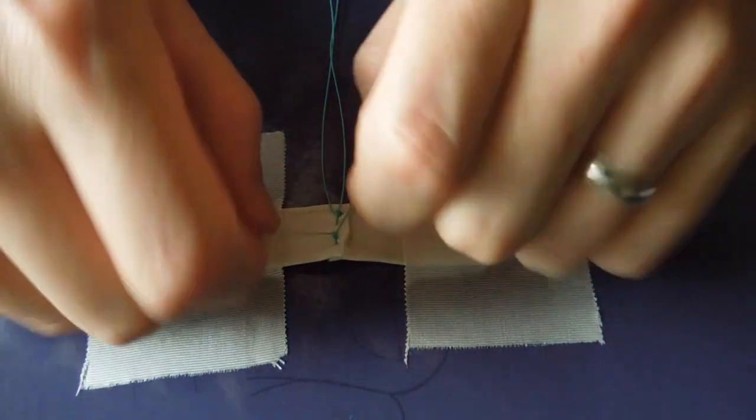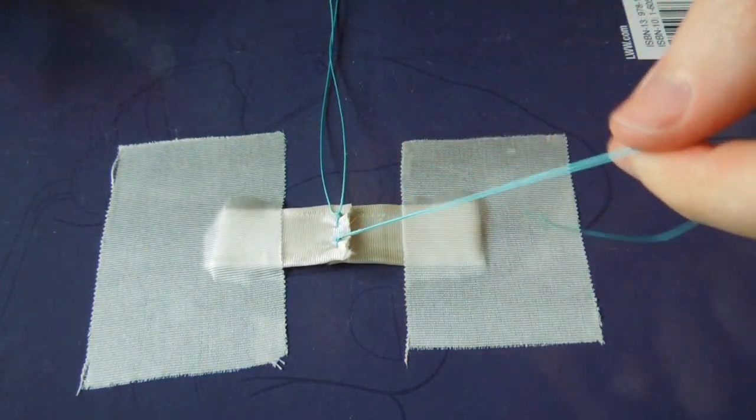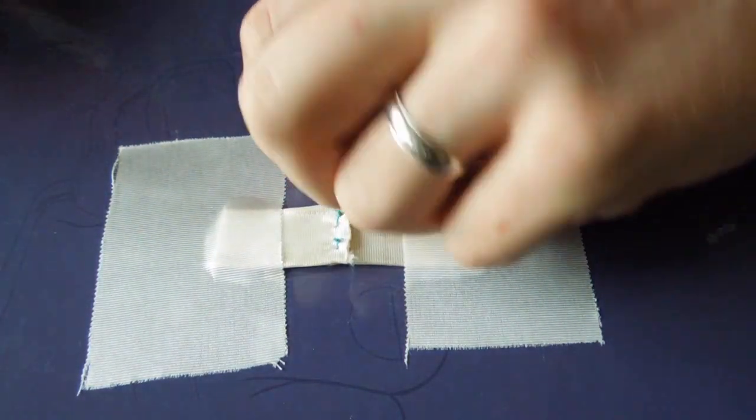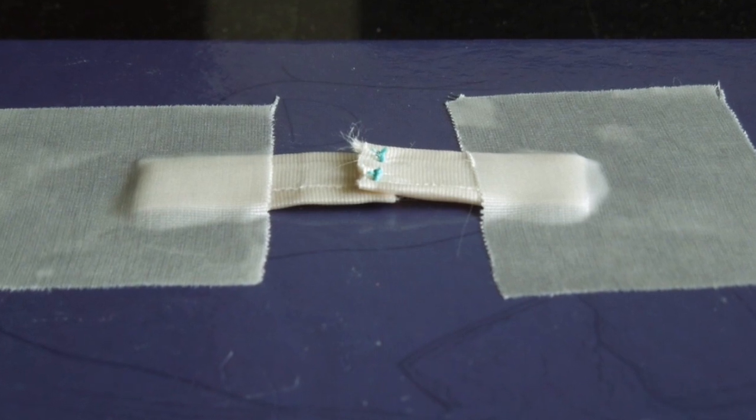So we've thrown our hand ties, we cut our sutures to just above the knot, and we have completed our pants over vest sutures. And you can see the overlap here of the sides.